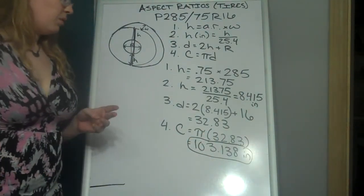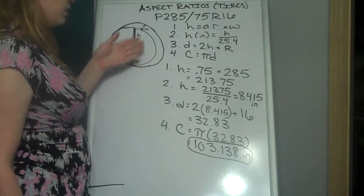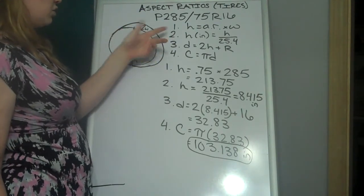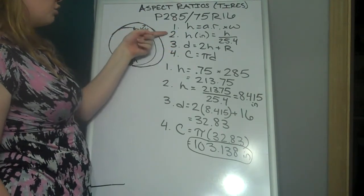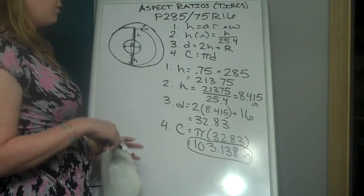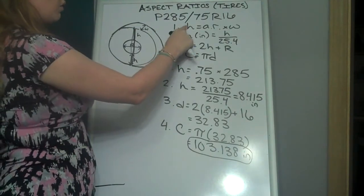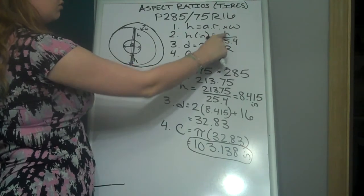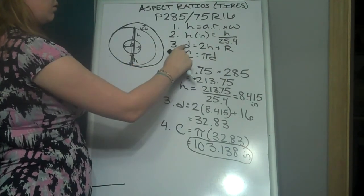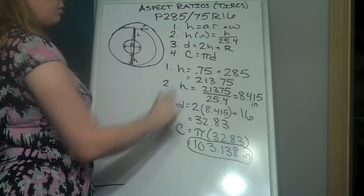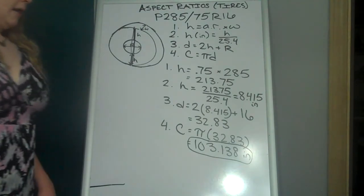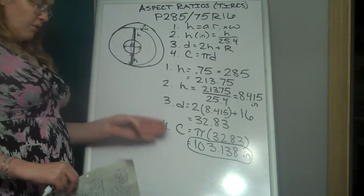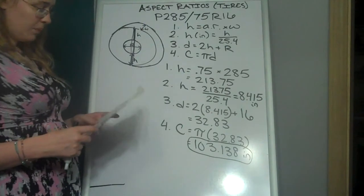And I hope it wasn't too fast. But it's really just straight up application of these four formulas. And each one uses the info from the last. Your result from number one is using number two. Your result from number two is used in number three. Your result from number three is used in number four. So it just builds up on itself until you get the circumference.